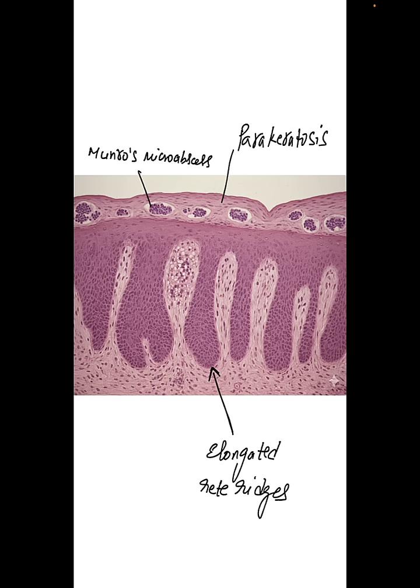This is how a histopathology slide of psoriasis will look under a microscope. You can see that the epidermis is thickened — we call that acanthosis — and the rete ridges are elongated due to increased epidermal turnover and lack of maturation. This results in loss of the granular cell layer, so there is no stratum granulosum, and nuclei in the stratum corneum are retained. We call that parakeratosis.